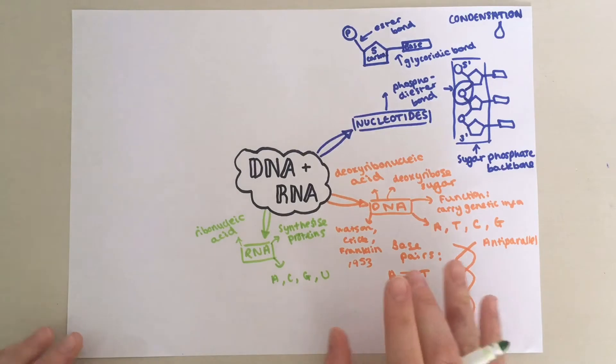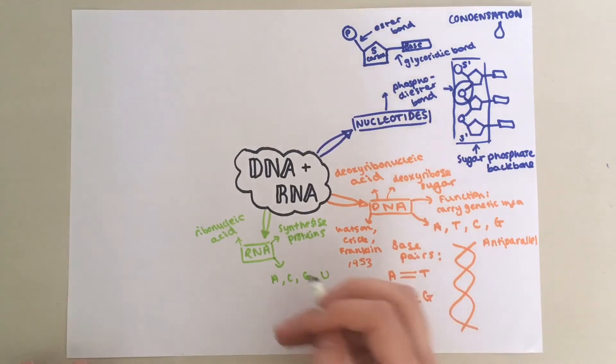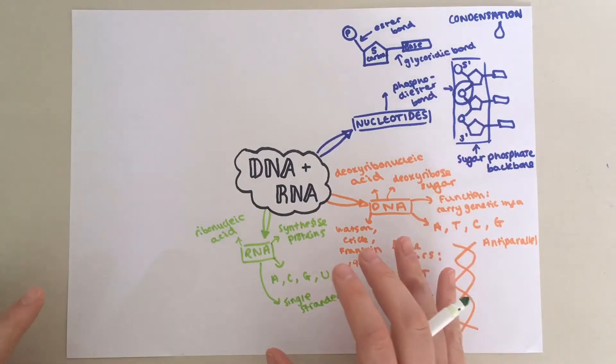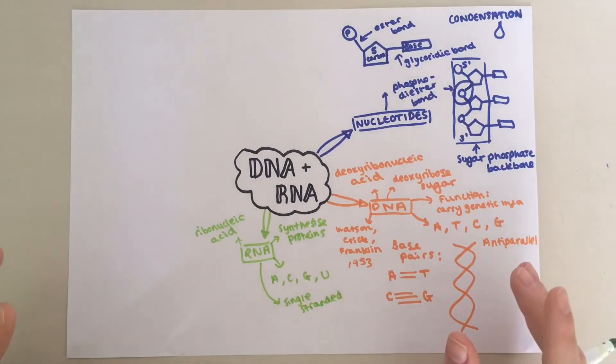Another difference between RNA and DNA is that RNA is actually single-stranded compared to DNA which is double-stranded and forms this double helix structure. The strands of RNA are also much shorter than the strands of DNA.